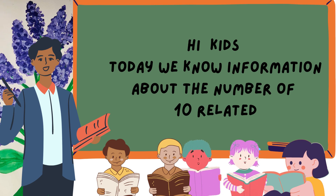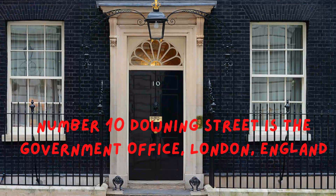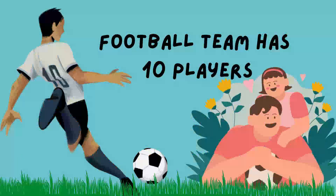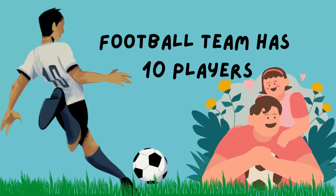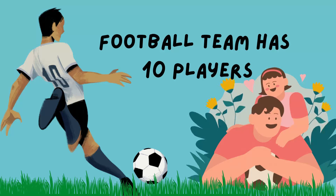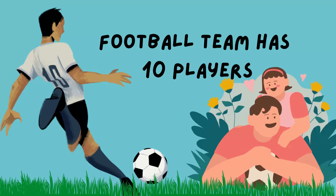Hi kids, today we learn information about the number 10. Number 10 Downing Street is the government office in London, England. A football team has 10 players.